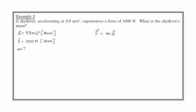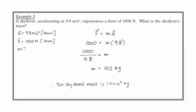So we'll go to our F equals ma, newton's second law, and we'll substitute our numbers. 1,000 equals m times 9.8. In rearranging, we can solve for m. And we find the mass of the skydiver is 102 kilograms. And in significant figures, 1.0 times 10 to the 2 kilograms.